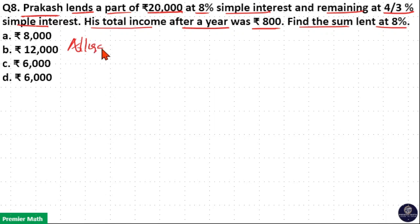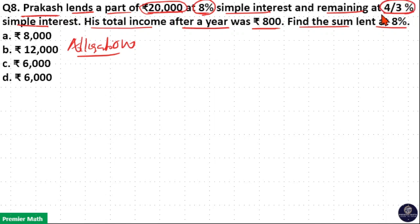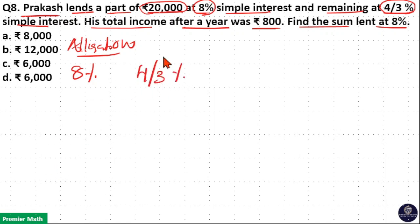Here, allegation is the best method for these types of problems. His total money lent is 20,000, and part of this 20,000 is lent at 8% interest and the other part at 4/3% interest. So write 8% and 4/3% on the LHS and RHS respectively.